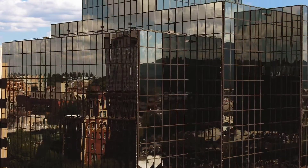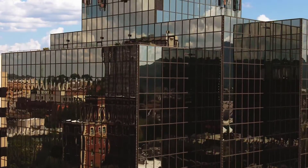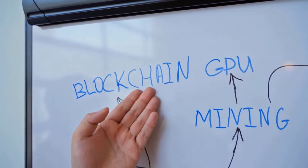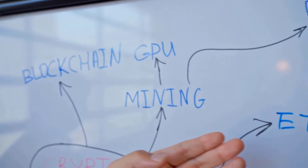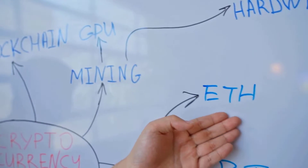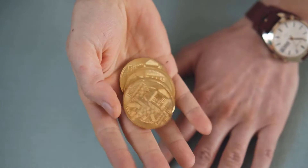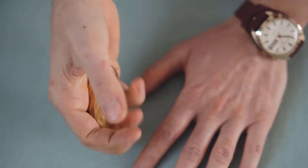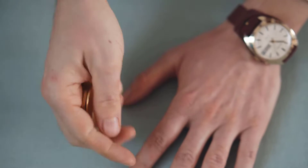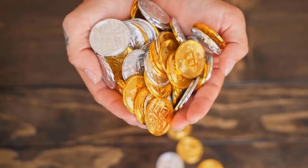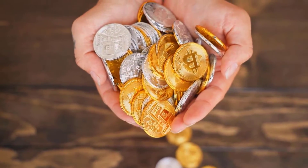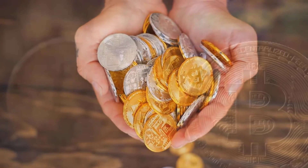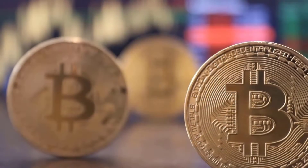Each shard has 250 validator slots, though scaling may add more. Harmony's approach is to assign validators randomly to each shard to avoid coordinated network takeover attempts. Harmony also discourages token hoarding by selecting those who stake above a certain amount while incentivizing those who stake less.